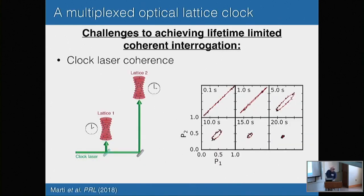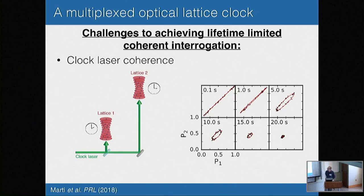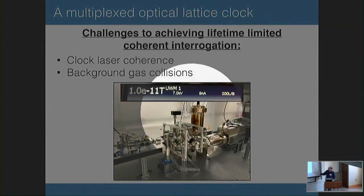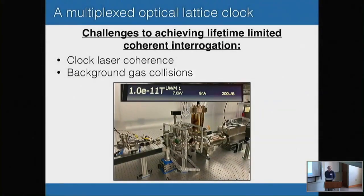In practice, what does that mean? There are limits to achieving lifetime-limited coherent interrogation. The first is clock laser coherence, but we'll take advantage of synchronized simultaneous differential comparisons to get around that — making plots of correlated phase or population between the two ensembles. Background gas collisions might limit the lifetime of atoms. I'm happy to say we've achieved excellent vacuum: limited by the gauge precision below 1 times 10 to the minus 11 Torr, with the ion pump current having fallen to six nanoamps, corresponding to something like 2 times 10 to the minus 12 Torr. We think we're in a regime where we won't be limited by background gas collisions at all.